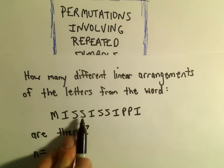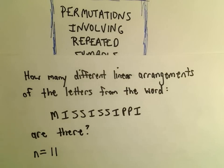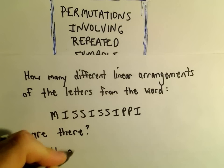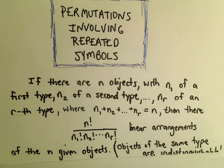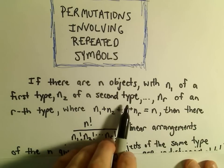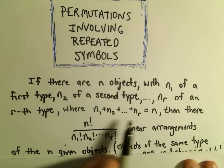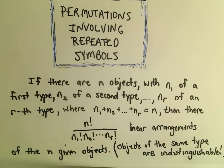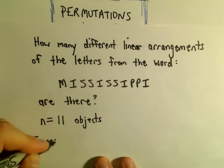We've got 1, 2, 3, 4, 5, 6, 7, 8, 9, 10, looks like 11 letters. So we've got 11 objects that we're working with. If you've got n objects, n sub 1 of a first type, n sub 2 of a second type, n sub r of the rth type, it says if you add the types together you should get n.